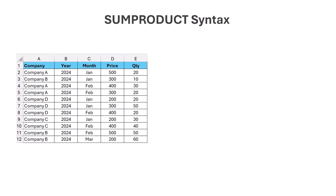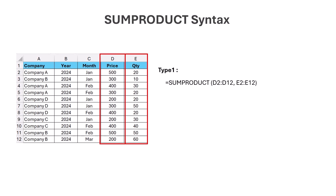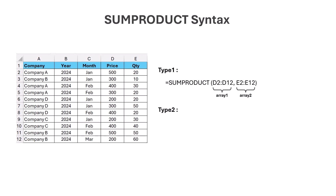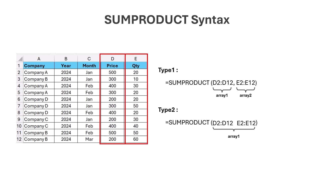The SUMPRODUCT function uses two types of syntax. For example, we have data of different companies with price and quantity records against each line item. To find the total revenue, we multiply each row's price and quantity. We can give column D values as input to array1 and column E values to array2. Alternatively, we can select column D and column E separately and add a multiplication or asterisk symbol between them, which directly tells SUMPRODUCT to multiply both column values and sum the result.